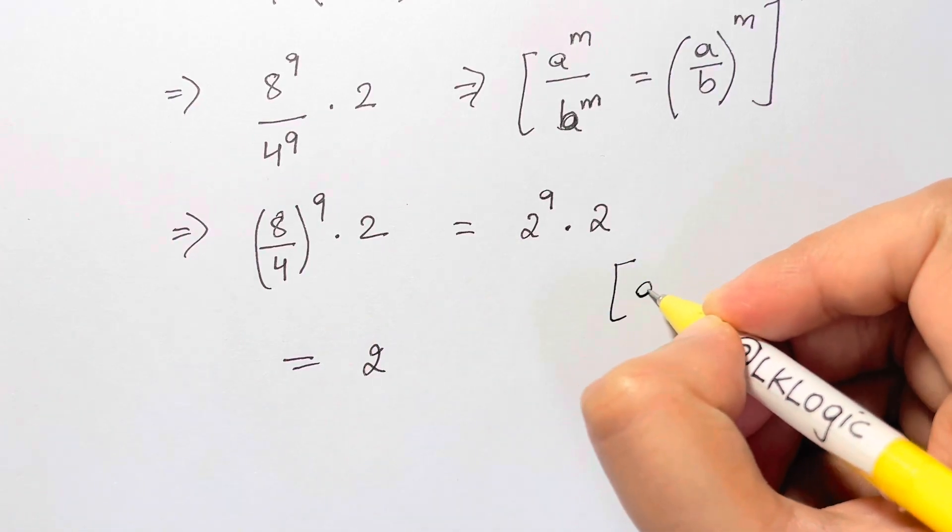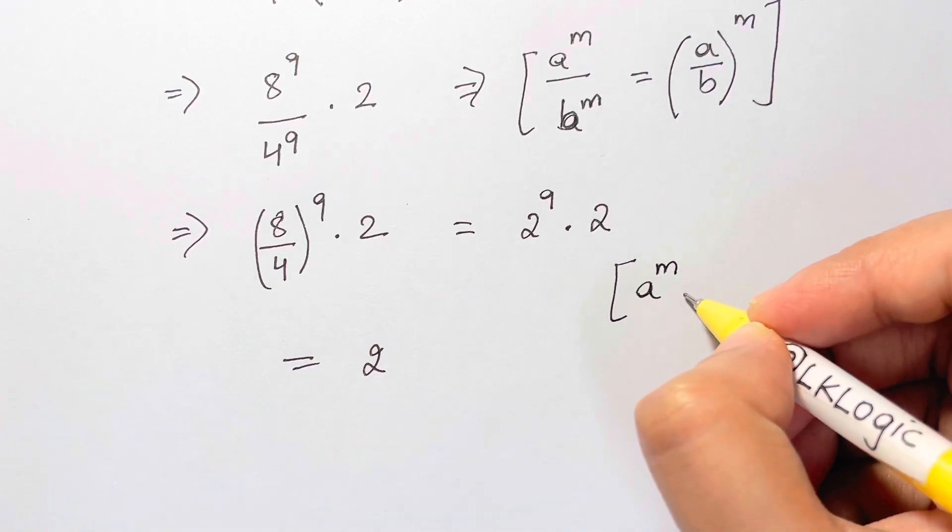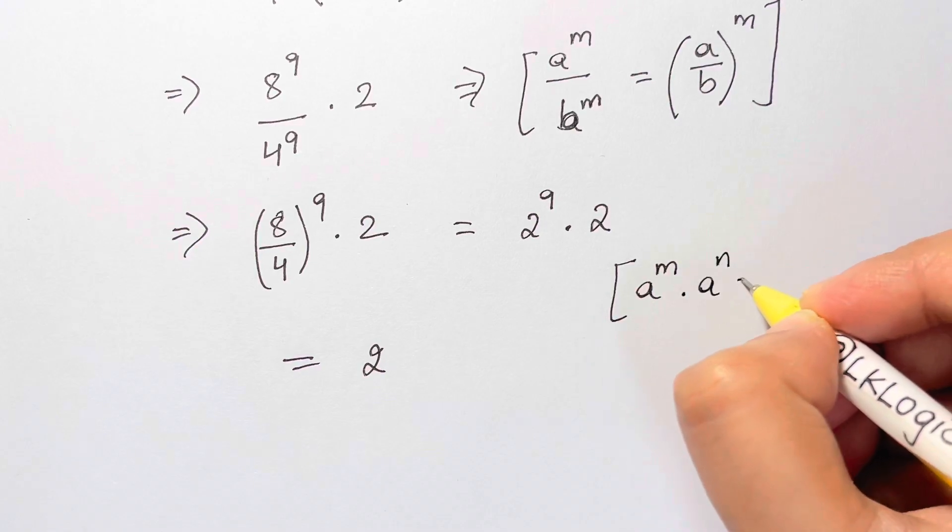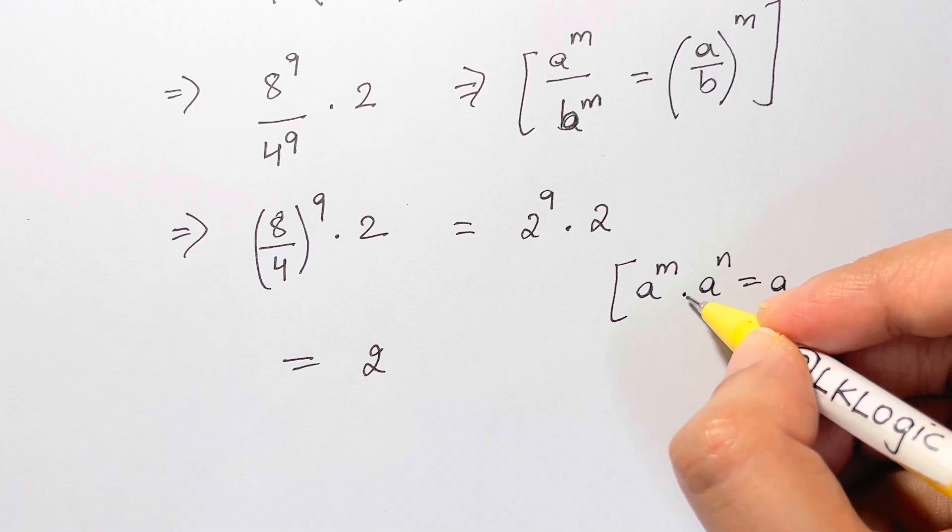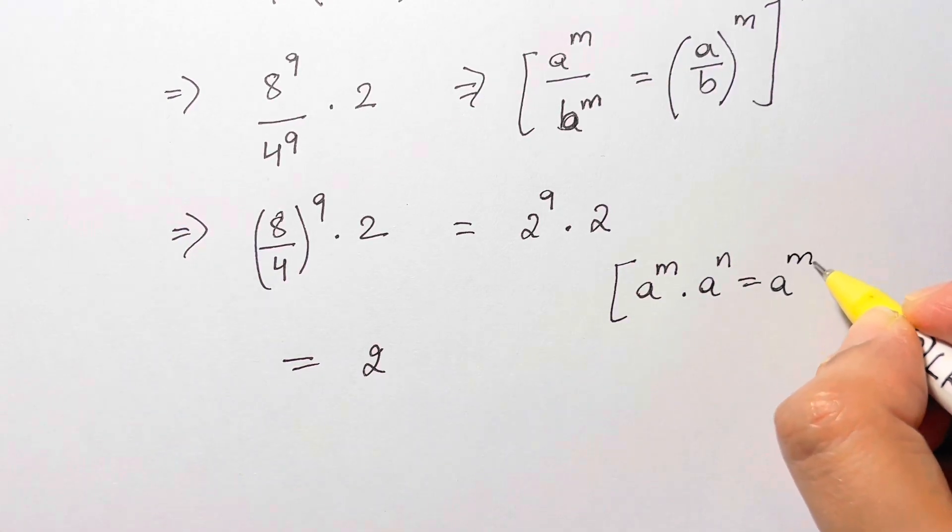Now we're going to apply this law: whenever you have a to the power of m times a to the power of n, you just add the powers when bases are same and there's multiplication between them.